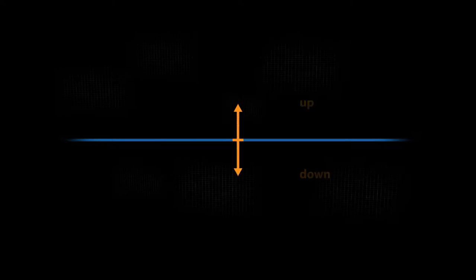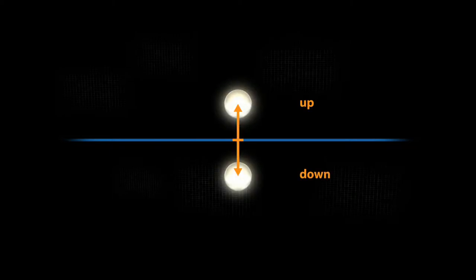All quantum states originate from a mirror plane. We generate the spin states up and down by means of the double arrow shown here.